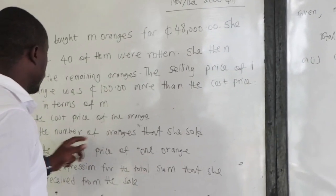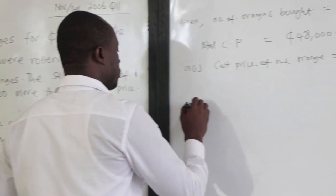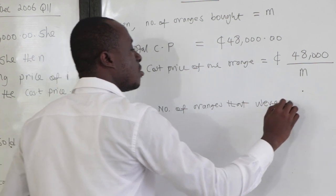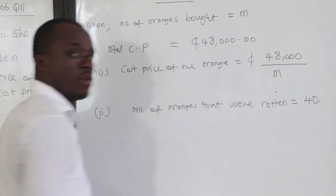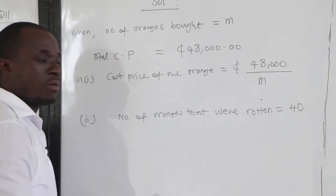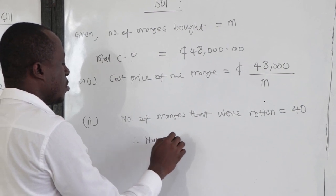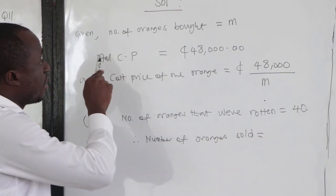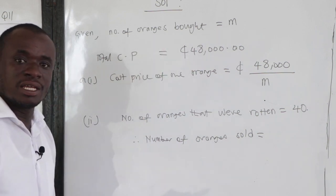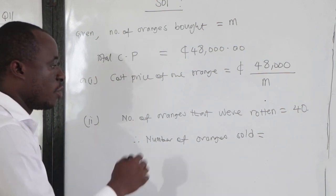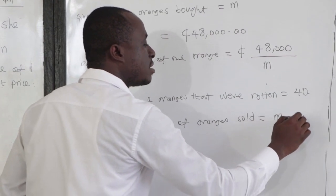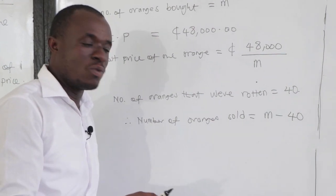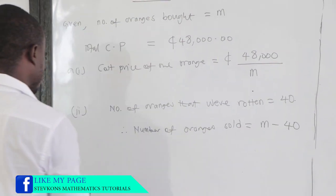The second question asks for the number of oranges that she sold. We are given that the number of oranges that were rotten is 40, and the number of oranges bought was M. So the number of oranges sold would be M minus the number that were rotten. The total number was M, 40 were rotten, so the ones sold would be M minus 40.